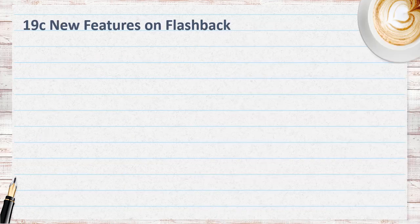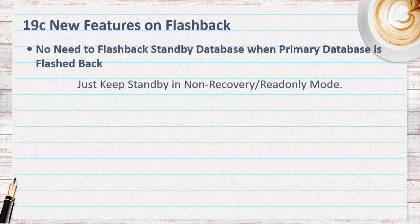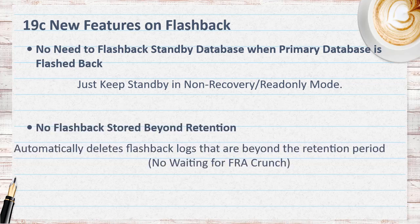Now let's look at the new features of 19c on flashback. In a Data Guard environment, if we flashback the primary database, we would have to flashback or rebuild the standby database. In Oracle 19c, we just need to put the standby database in mount mode with no managed recovery or read-only, then flashback the primary database. When you restart MRP after closing the physical standby, the recovery process automatically flashbacks the standby database and continues to apply the new branch of redo — so no worries about the standby.